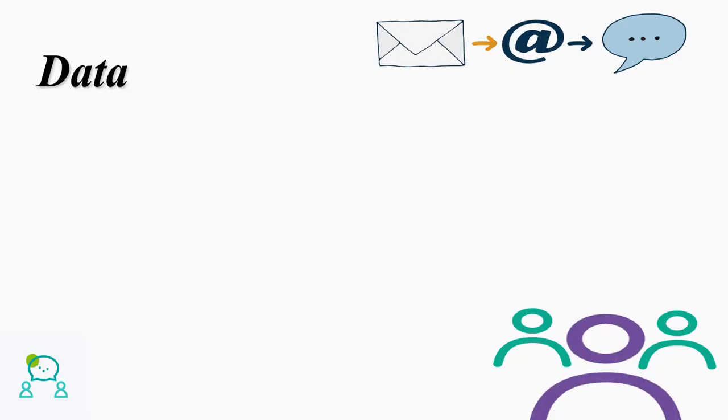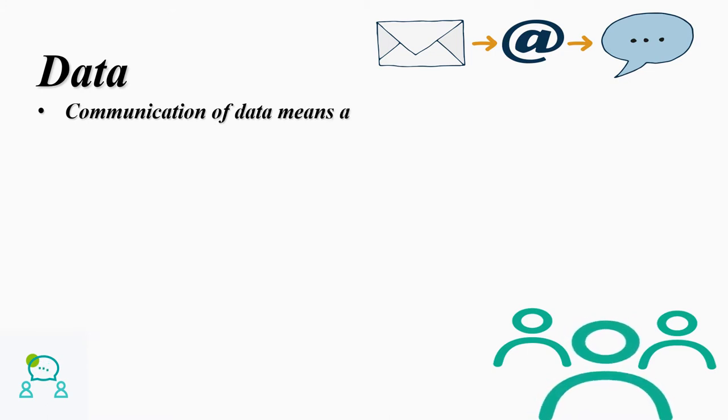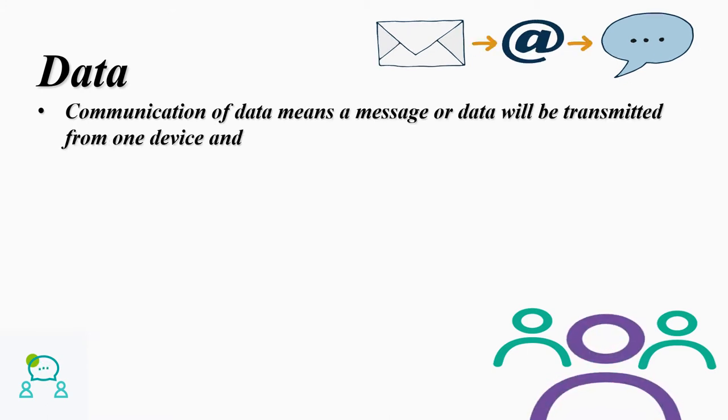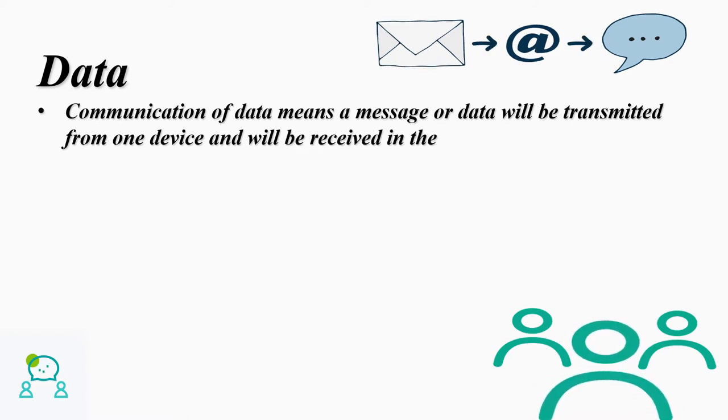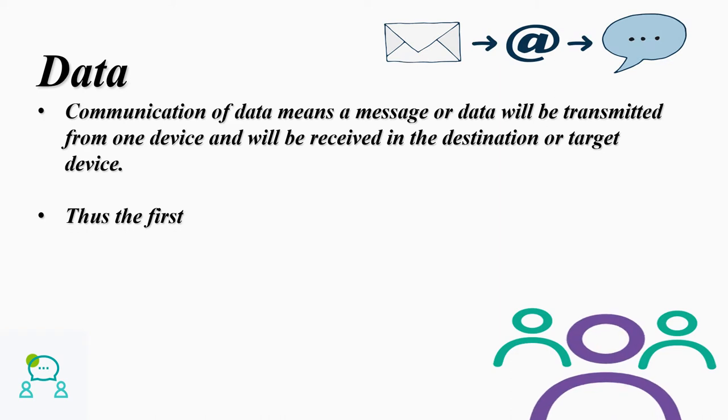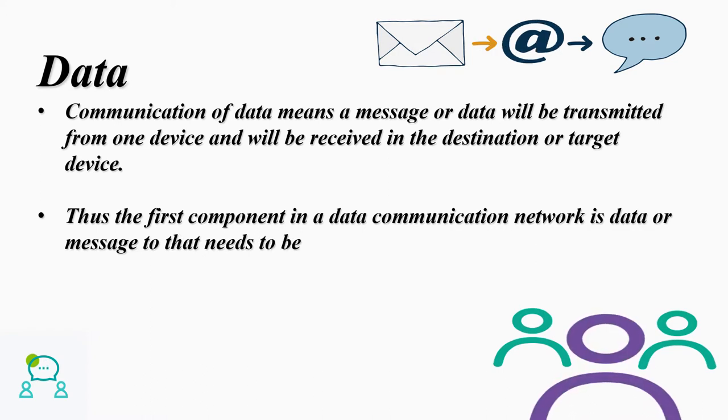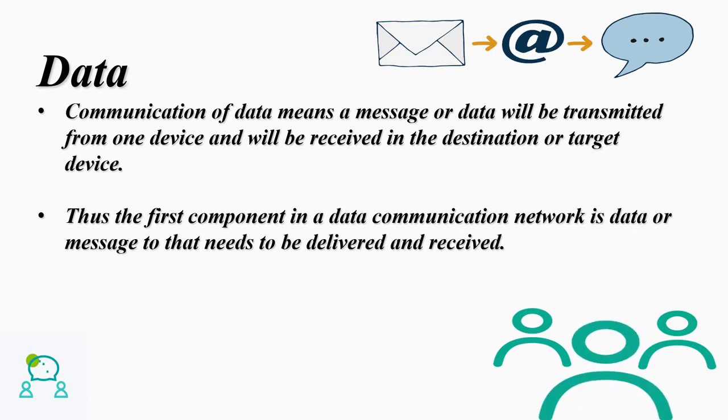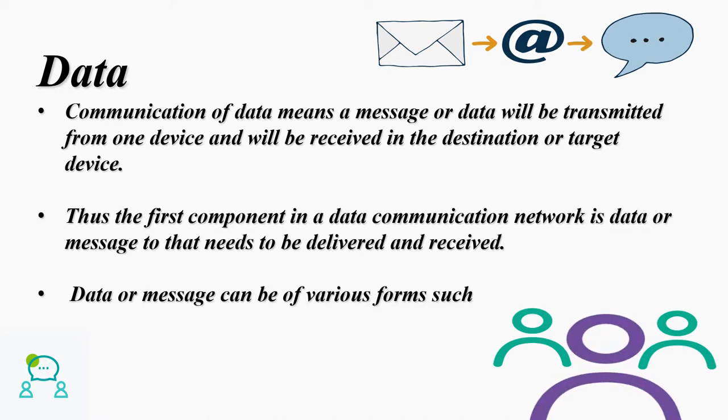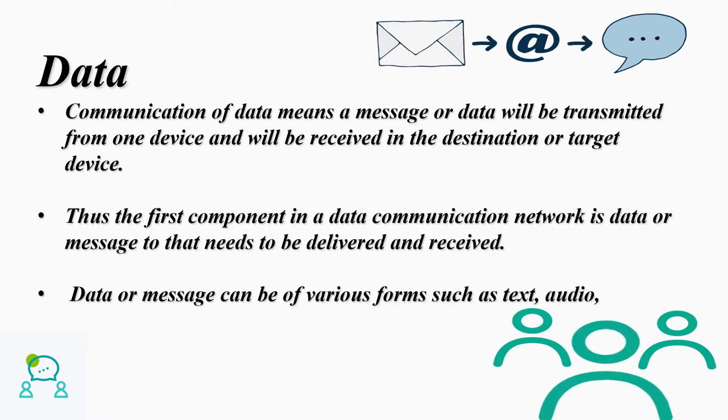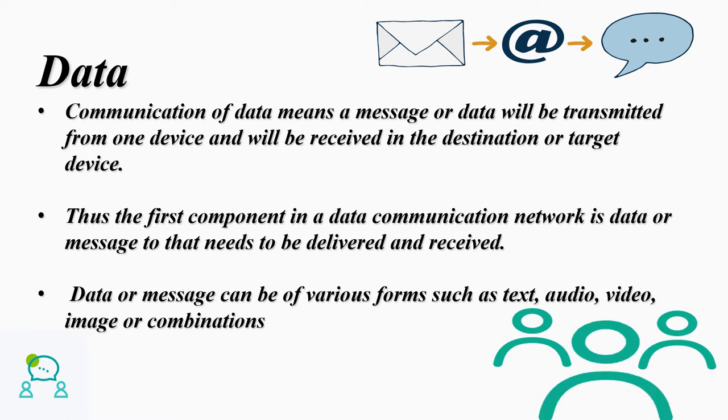Data communication means a message or data will be transmitted from one device and will be received in the destination or target device. The first component in a data communication network is data or message that needs to be delivered and received. Data or message can be of various forms such as text, audio, video, image, or combination of these forms.